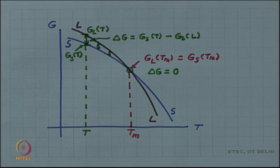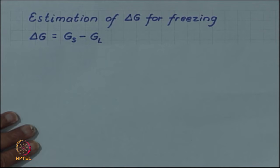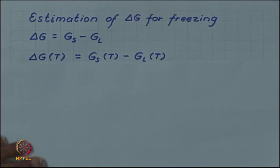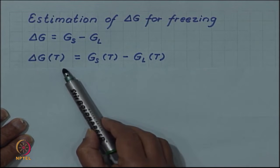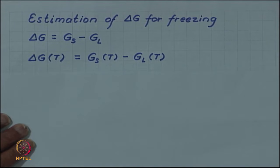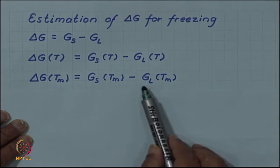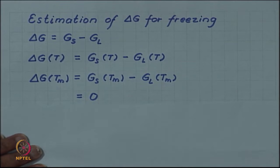Let us now estimate this free energy difference — the driving force for freezing. By definition, the driving force is the free energy of solid minus the free energy of liquid: ΔG(T) = G_s(T) − G_L(T). If we evaluate this at the melting point, we have ΔG(T_m) = G_s(T_m) − G_L(T_m). But since G_s and G_L are equal at the melting point, this free energy difference ΔG(T_m) is zero.